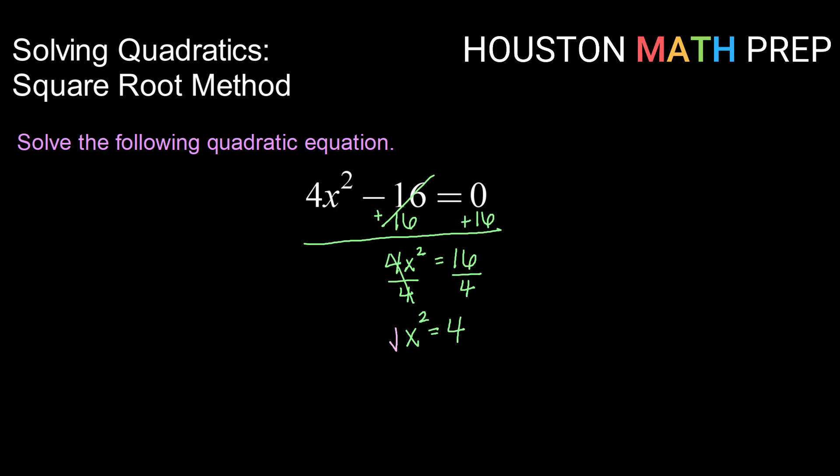To undo squared, I'm going to square root both sides, remembering that that means I'm going to get a positive and a negative in my answer. So I'm going to get plus or minus the square root of 4 is 2.